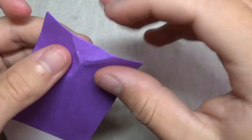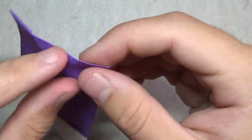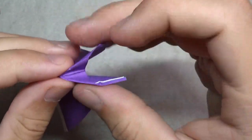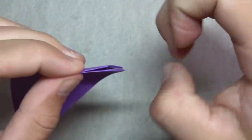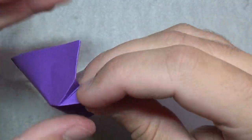Okay. And now let's reverse fold on these two creases right here we made. Just kind of fold it in half like this and reverse fold it.